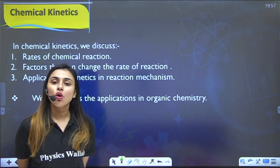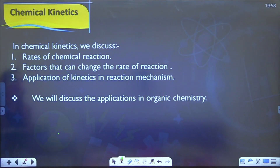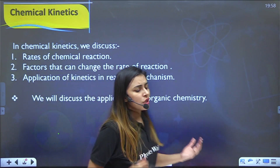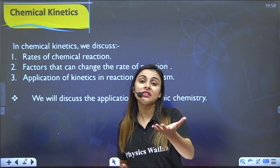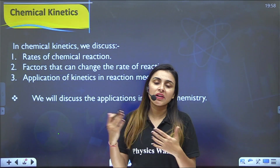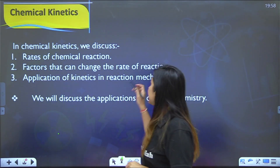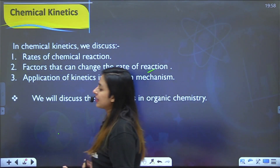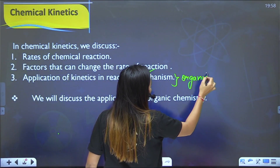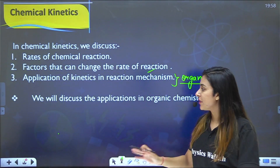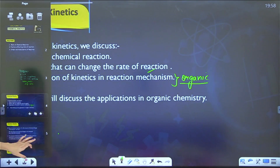In chemical kinetics, we discuss: rates of chemical reactions, factors that can change the rate of a reaction (increasing or decreasing it), and applications of kinetics in reaction mechanisms. We will focus on the first two parts here; the applications in reaction mechanisms will be discussed in organic chemistry.